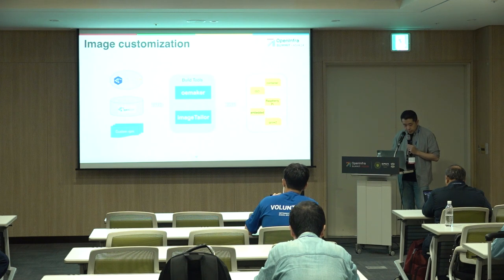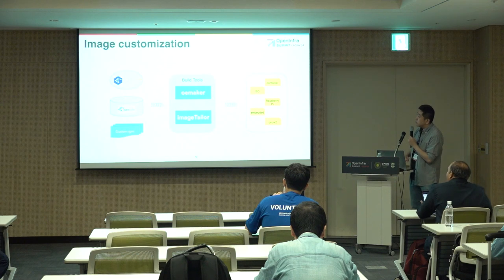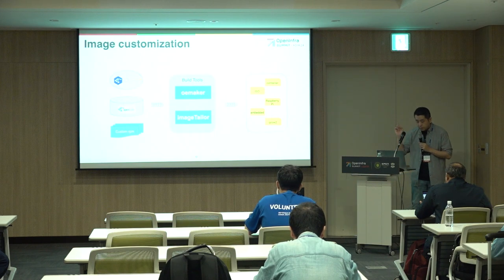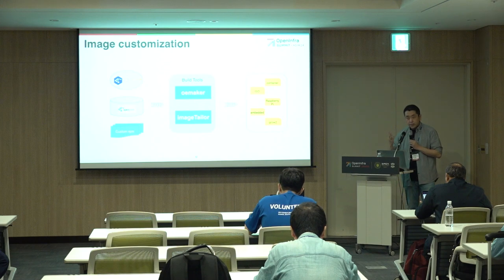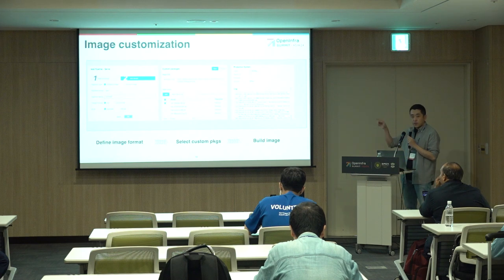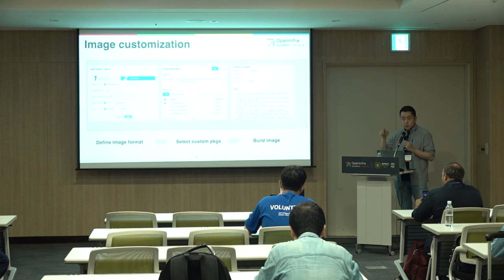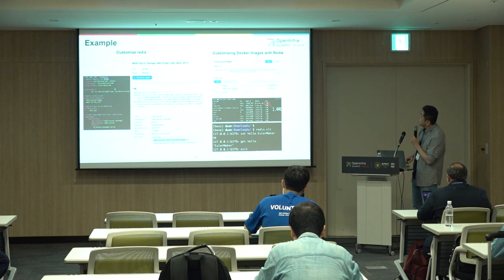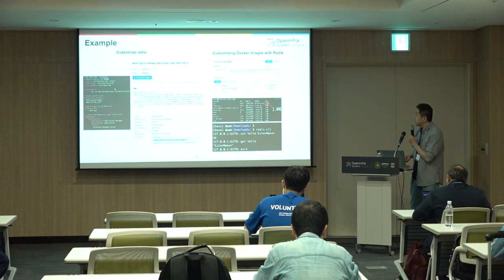Regarding customization, you just piecemeal the things you need and EuroMaker will shape the desired format for your build. There are a lot of fields — you just select the things you want, click through them, and avoid all the headaches. For example, you can customize a Redis package, or customize a Docker image with OpenEuler as the base image with Redis on it. It's pretty simple.